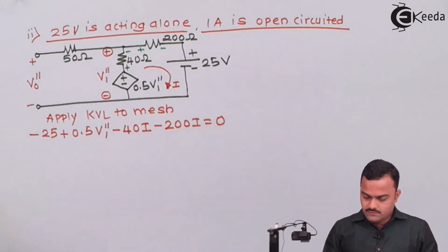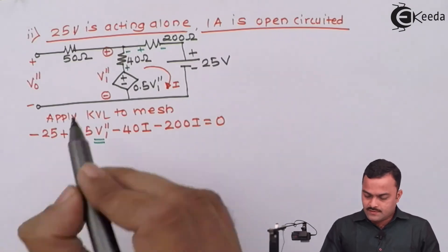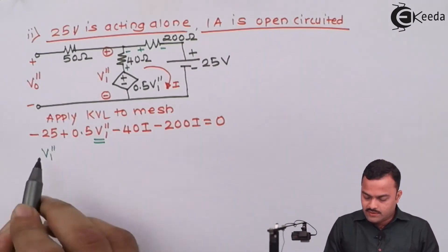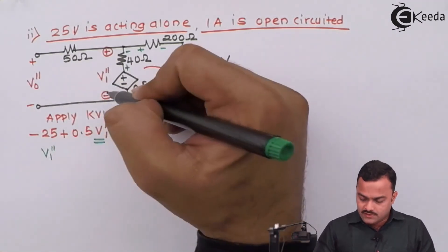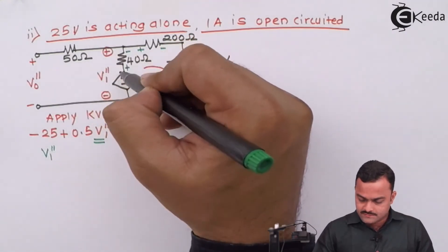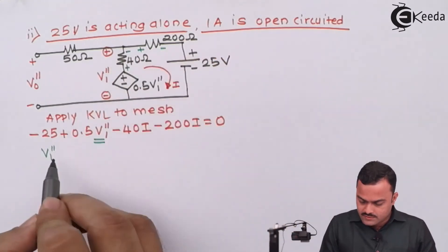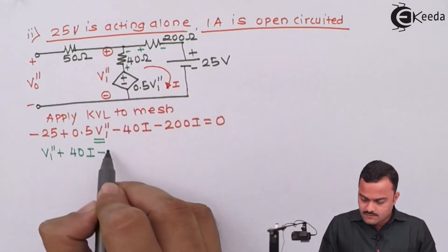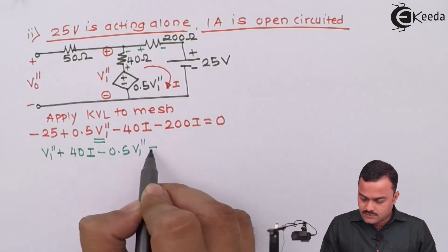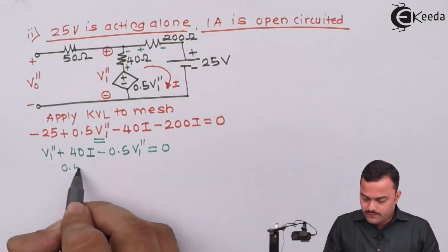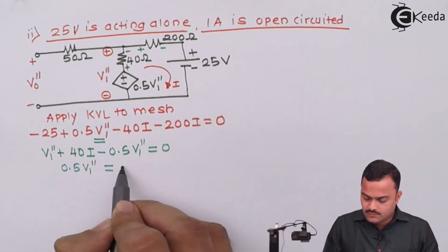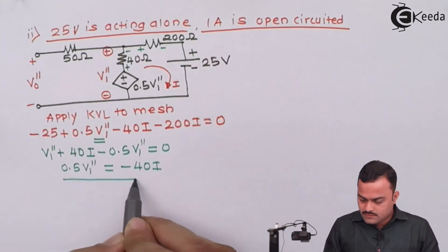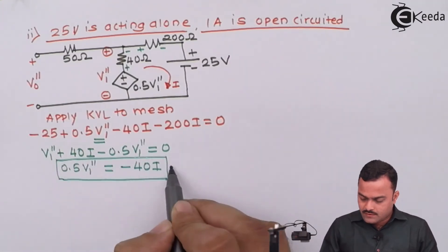We need a substitution for V1''. Applying KVL to the small sub-circuit: plus V1'' plus 40 I minus 0.5 V1'' = 0, which gives 0.5 V1'' = minus 40 I. This is our substitution equation for 0.5 V1''. Substituting into the main KVL: minus 25 minus 40 I minus 40 I minus 200 I = 0, giving minus 25 minus 280 I = 0, so I = minus 25/280 = minus 0.0893 A.